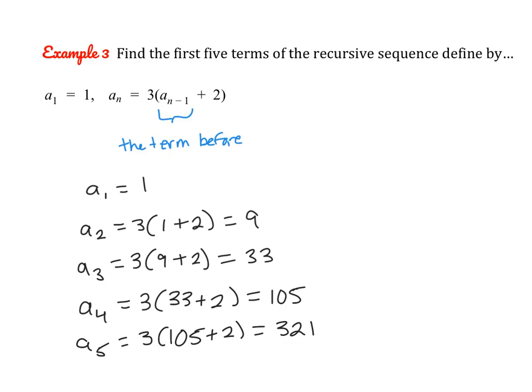Just to recap: we took each previous term and used it in the formula. a_sub_1 was used to find a_sub_2; that result was used to find a_sub_3; 33 was used to find a_sub_4; and 105 was used to find a_sub_5. Whenever you see a_sub_(n-1), it means one term before.